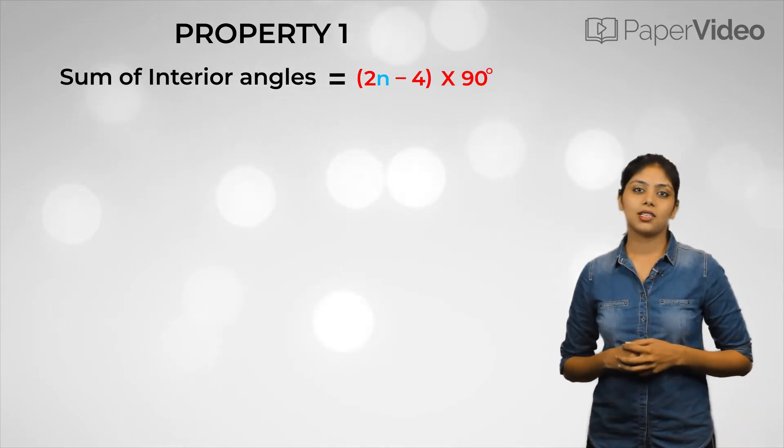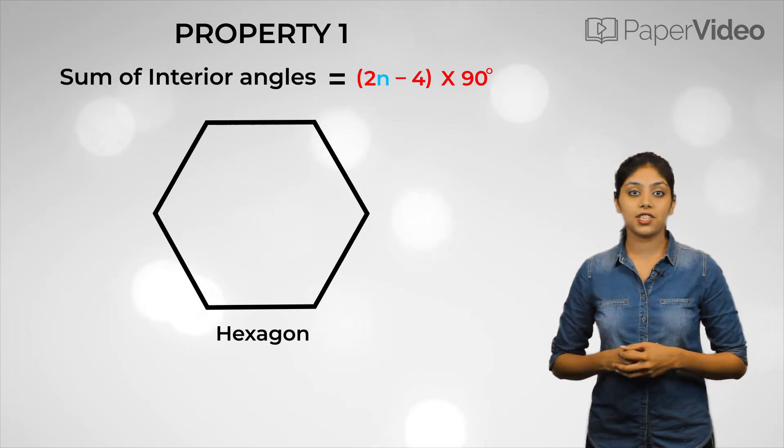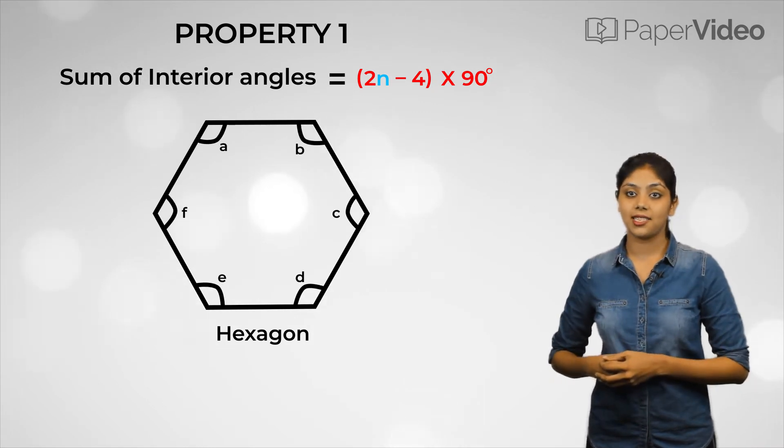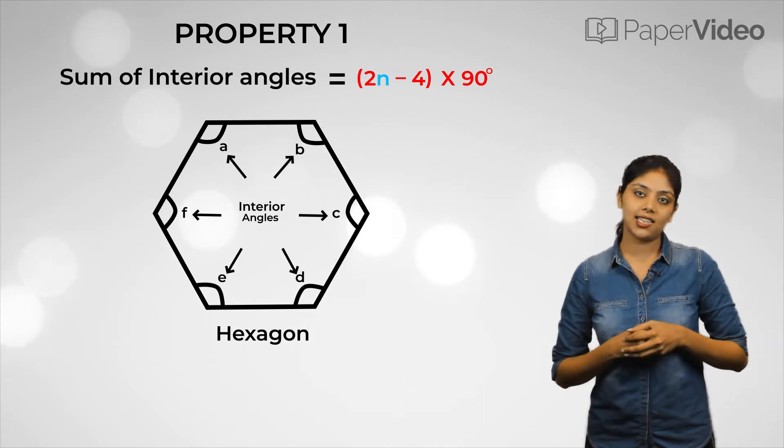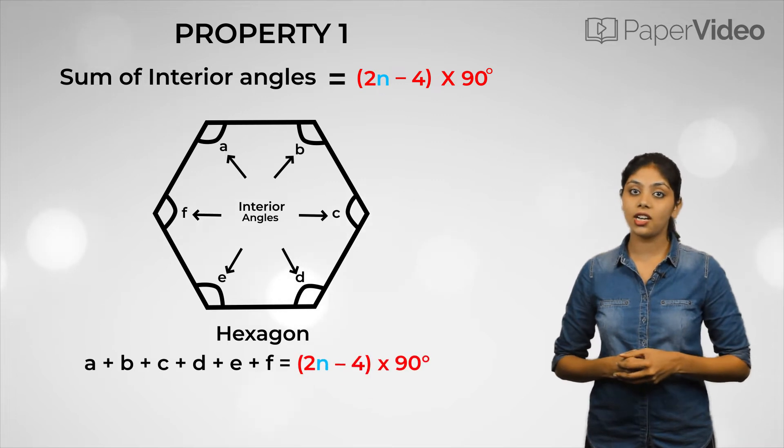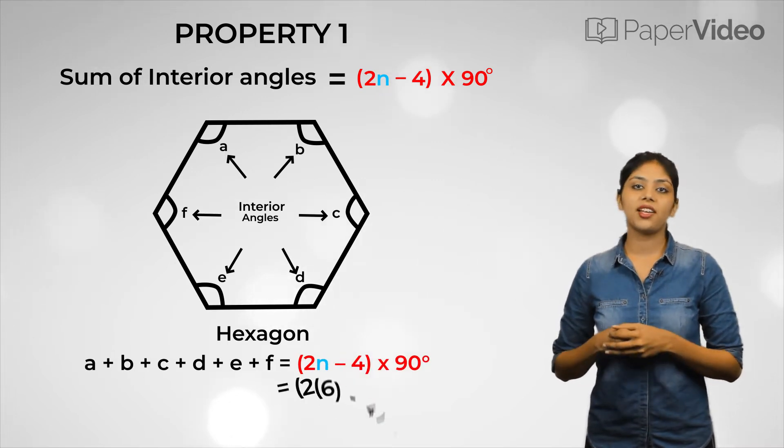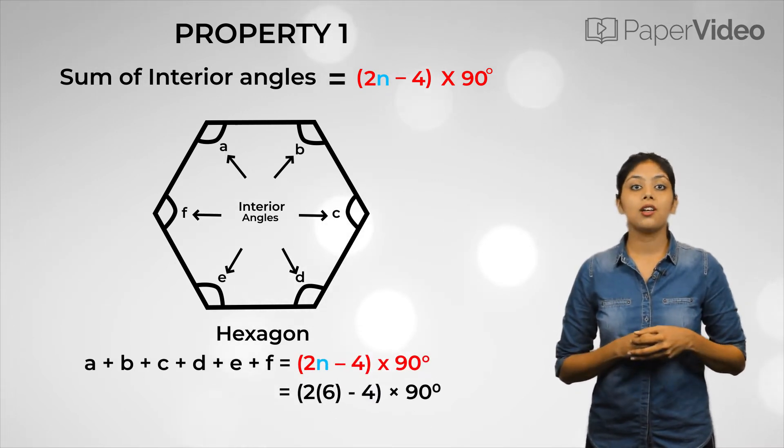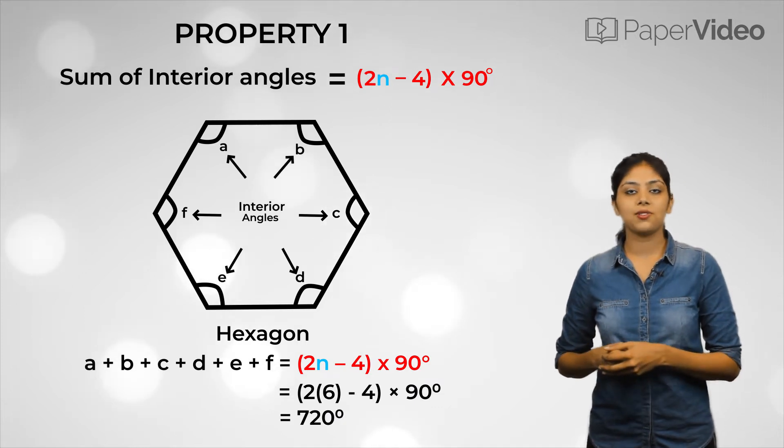For example, consider a hexagon which is a polygon of six sides. It also has six interior angles. So, according to the property, the sum of the interior angles of a hexagon will be 720 degrees using this formula.